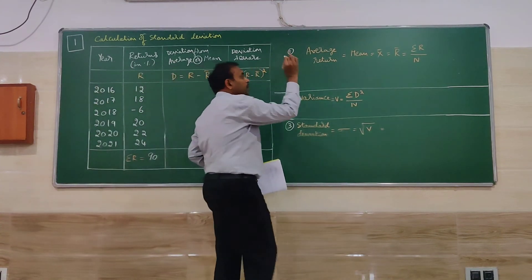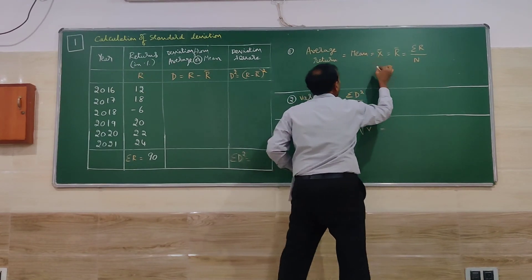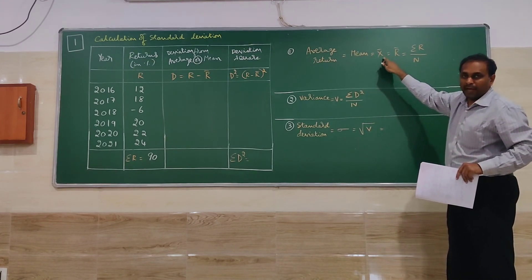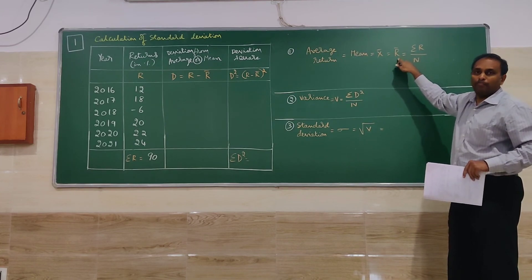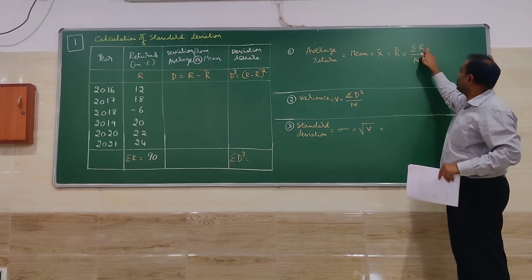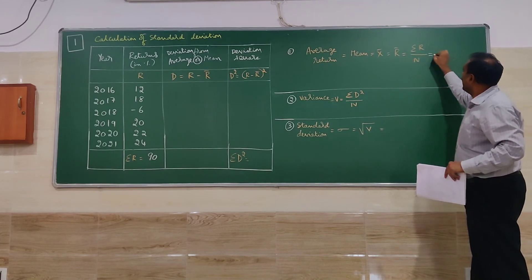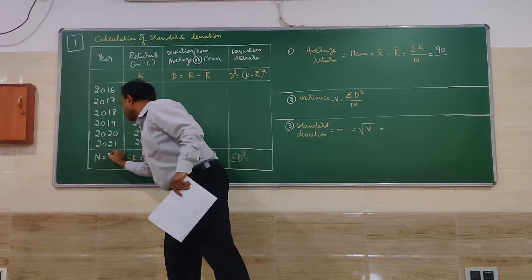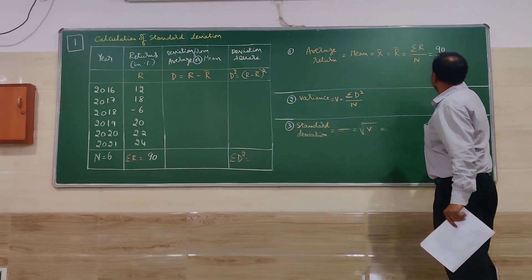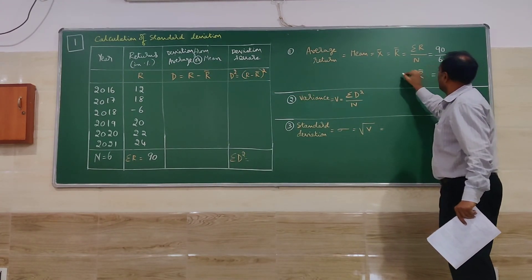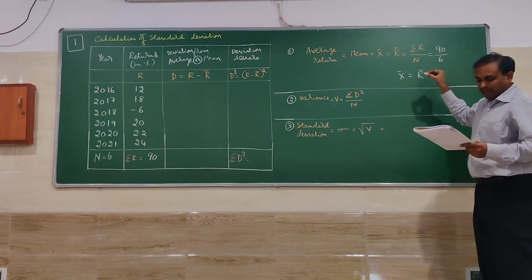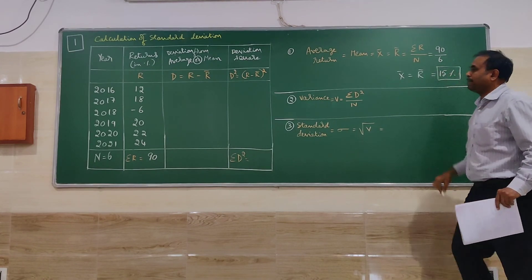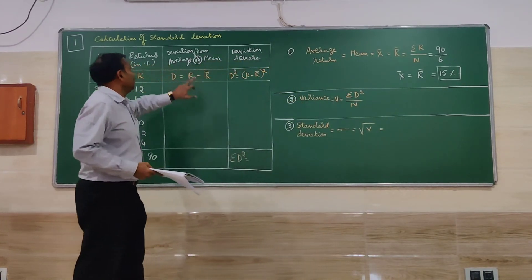The total returns is going to be useful for calculating the average return. Average return another name is called mean. It is denoted by x bar or R bar. That is average return: summation R divided by N. N is number of items or number of years. As I told there are total 6 years, so N is equal to 6. So when you see here 90 divided by 6 that is going to be 15 is the average return. So the first step calculating the average return is 15.